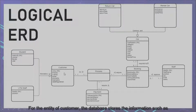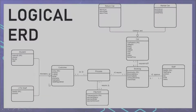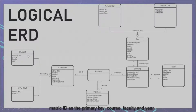For the entity of customer, the database stores information such as IC number as the primary key, first name, last name, email, phone number, license number, and register date. The participation and disjoint constraints for the customer are mandatory. Under the customer entity, there are two sub-entities: student and UTM staff. For the student, the database stores matric ID as the primary key, cost, faculty, and year.